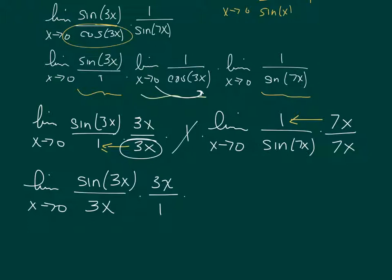So I'm just multiplying by 1. And then I have the limit as x approaches 0. Let's move that 7x up top. And so I still have the 7x on the bottom.